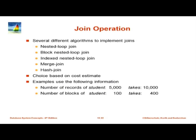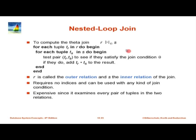Now let us focus on join algorithms. There are many different ways of doing joins. The simplest is nested loop join. This nested loop join is applicable regardless of the join condition — I am going to do theta join, which is essentially r join s on some condition. Natural join is a special case with projection, but this is the most general case; the condition could be arbitrarily complex. For each tuple t_r in r and for each tuple t_s in s, test the pair to see if they satisfy the join condition. If they do, output the concatenated tuples.